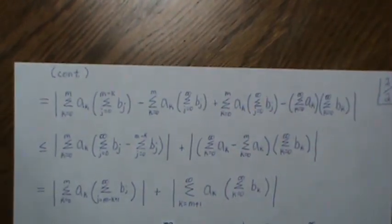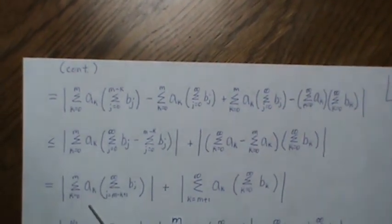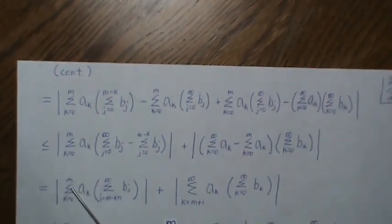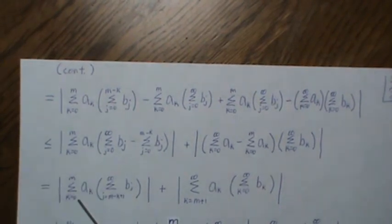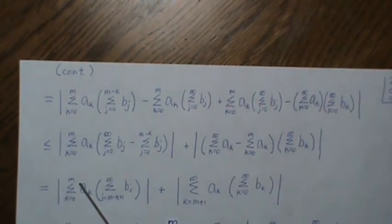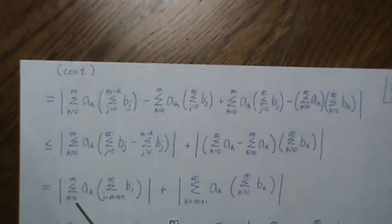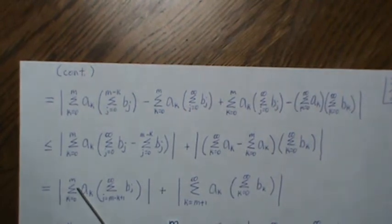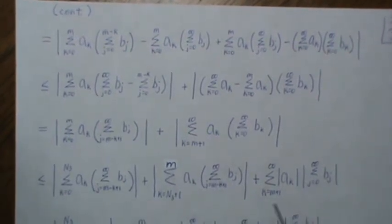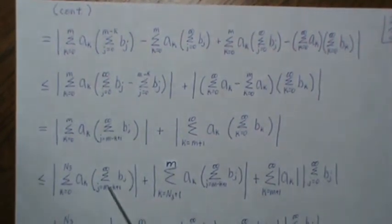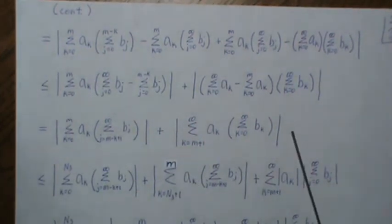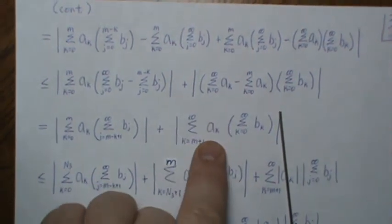Now this term, we go from zero to M but in between zero and M is N3 because M was two times N3. So if we split this and go from zero to N3 and then N3 plus one to M we have two terms in here, then we use a triangle inequality and so this becomes this.